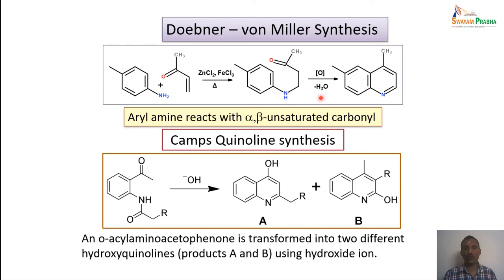In Camps quinoline synthesis, ortho-acylaminoacetophenone — where the acetophenone unit bears an acyl-substituted amino group at the ortho position — undergoes cyclization in the presence of a strong base to give two products, A and B, which are isomeric products formed in this reaction.